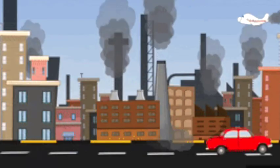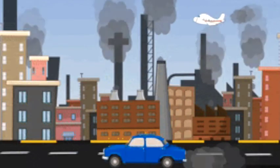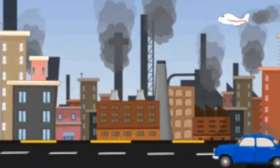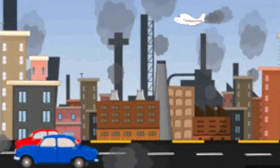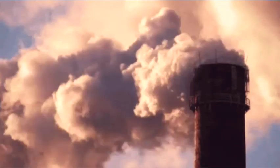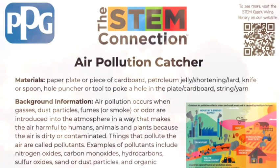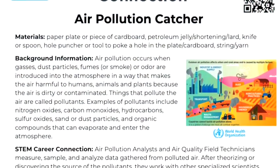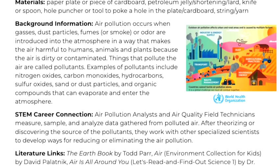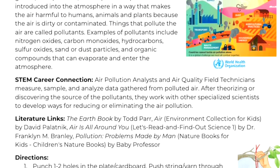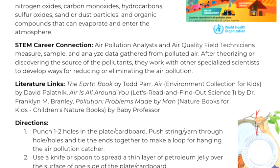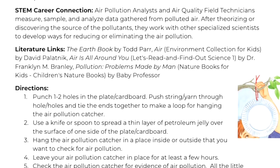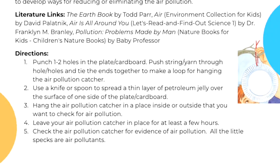Air pollution occurs when gases, dust particles, fumes or smoke, or any other pollutants enter the atmosphere in a way that is harmful to humans and other life. To learn more about air pollution and the content behind today's STEM Quick Win, check out our activity sheet linked down below.